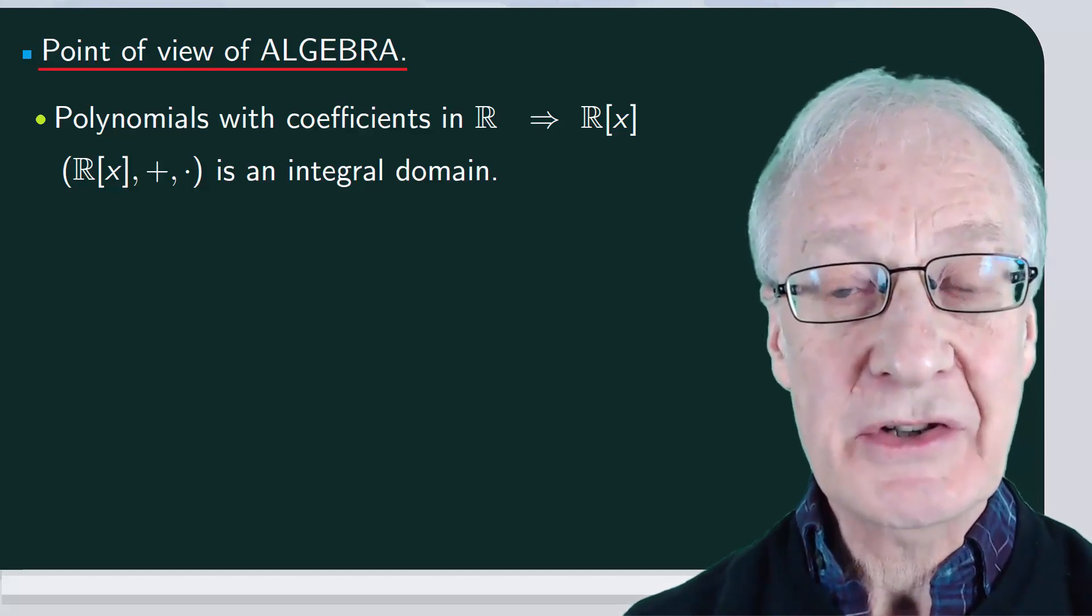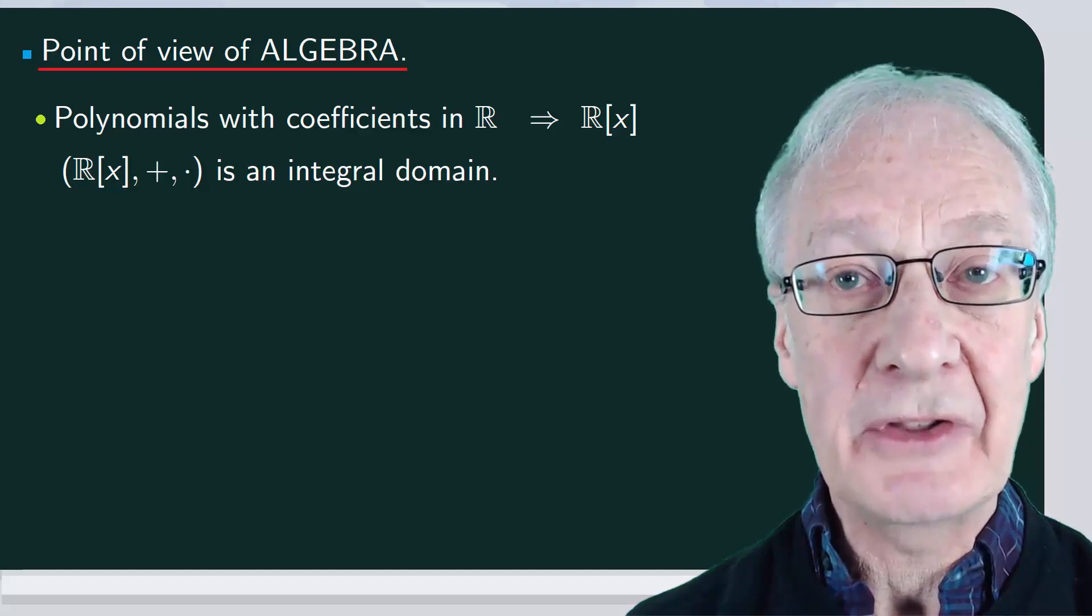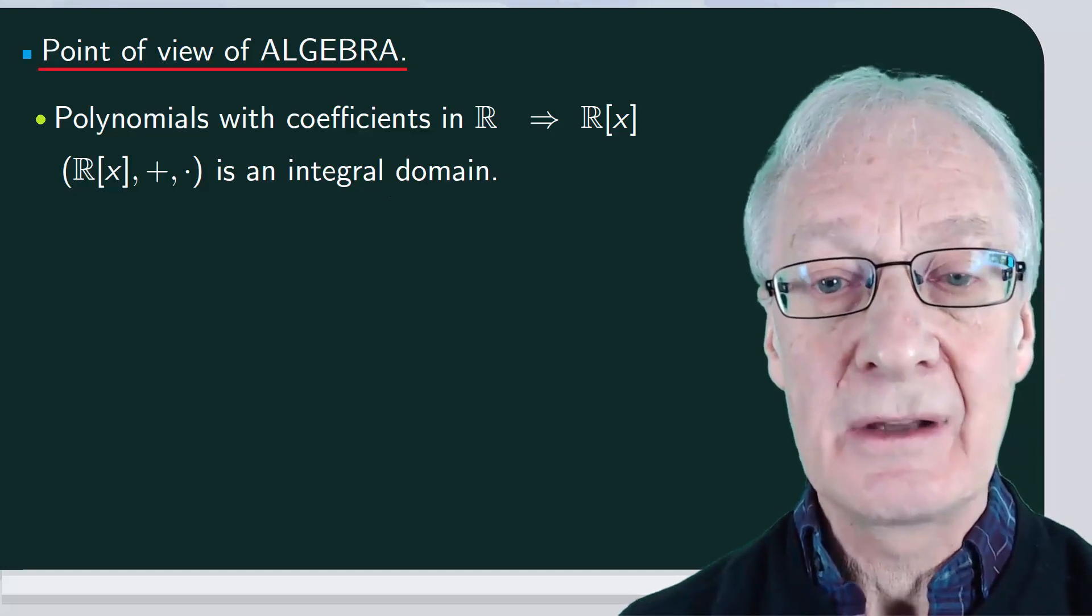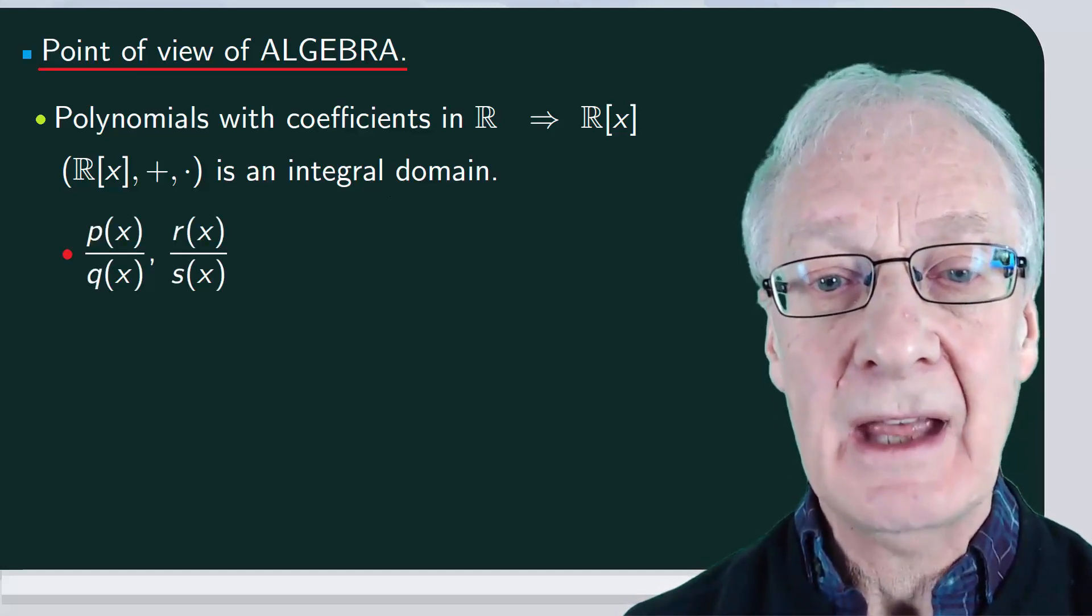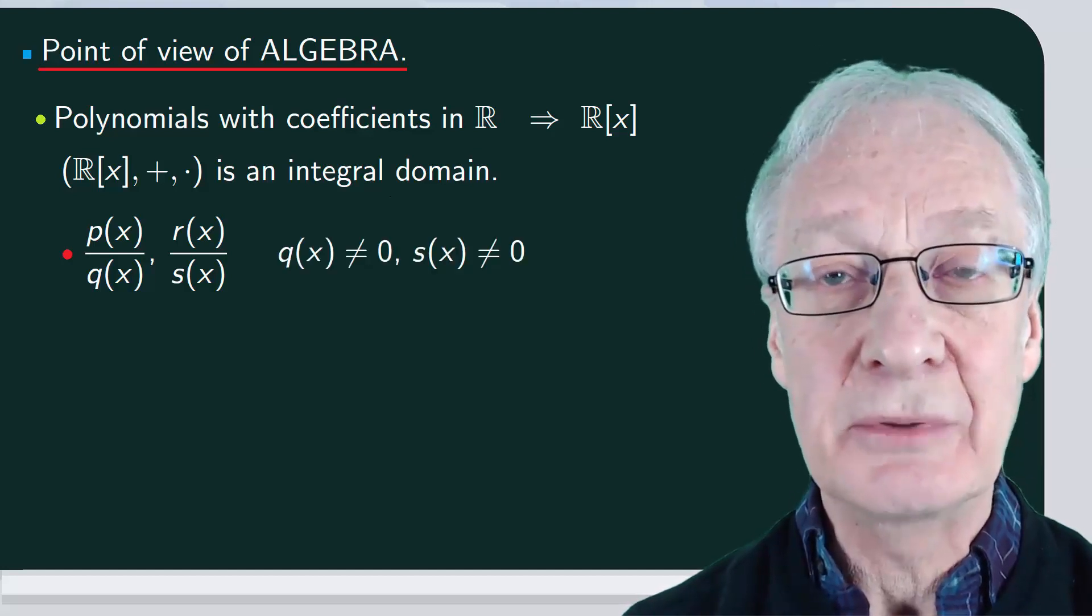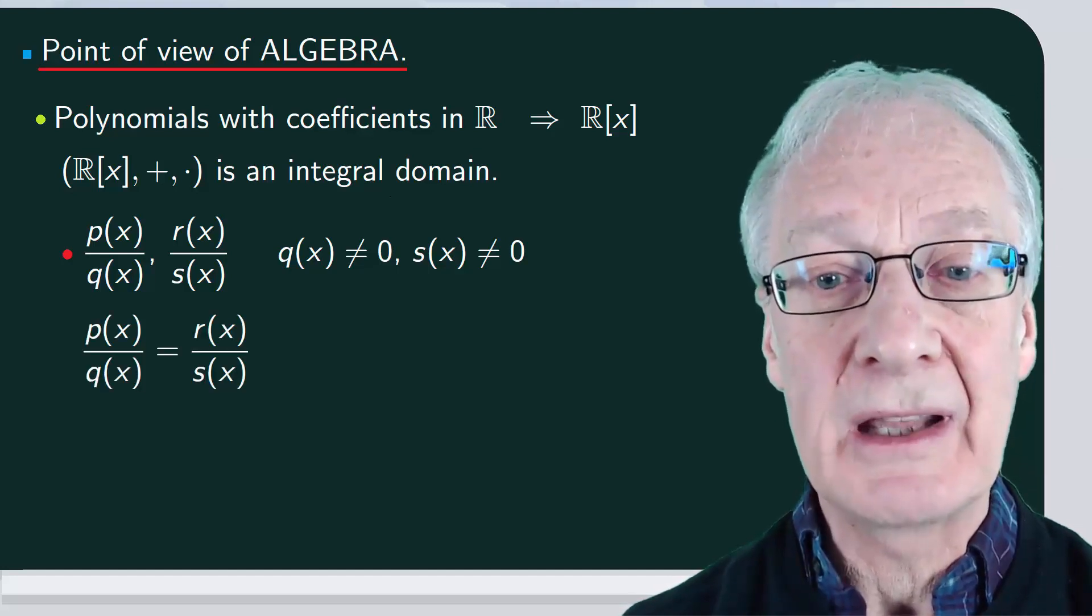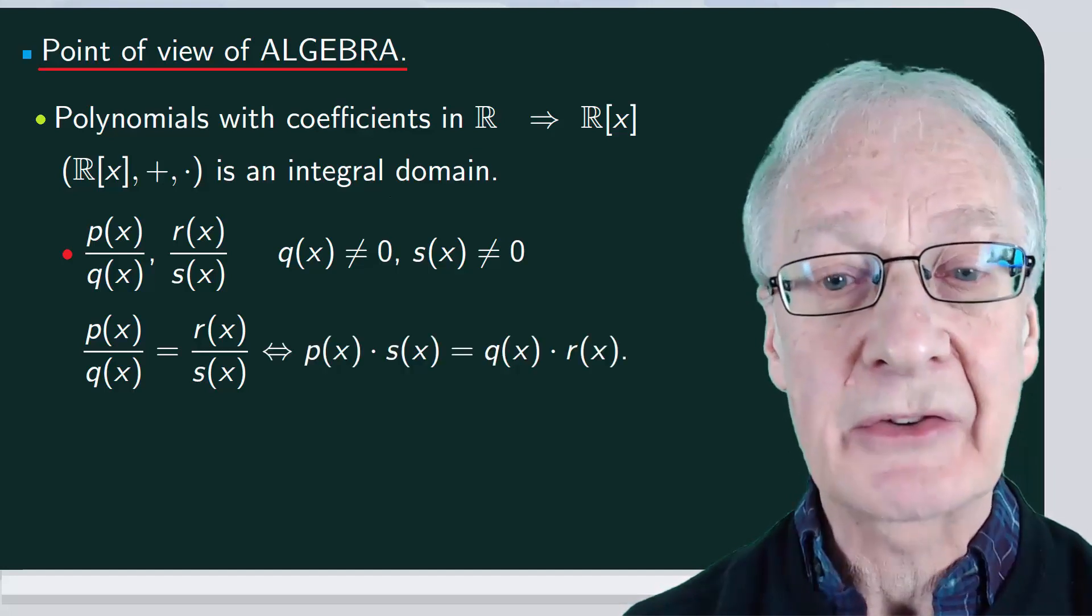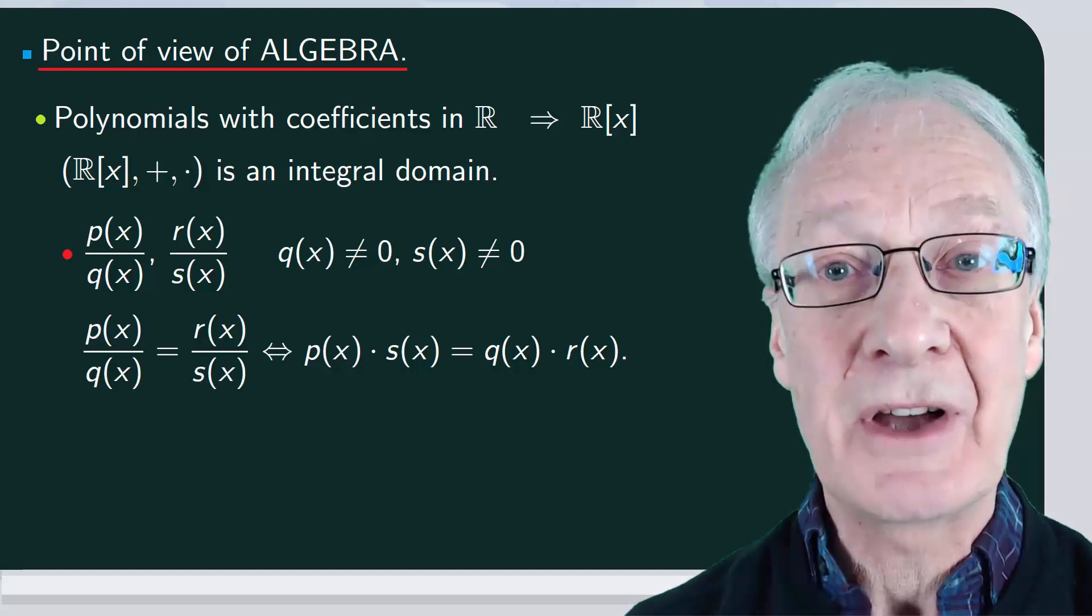As in the case of integers, we can consider fractions of polynomials, and everything is done in the same way as for fractions of integers. We say that two fractions, p of x over q of x and r of x over s of x are equivalent, so we can put an equal sign between them, if, when we cross multiply, we obtain the same result, that is, p of x times s of x is equal to q of x times r of x.